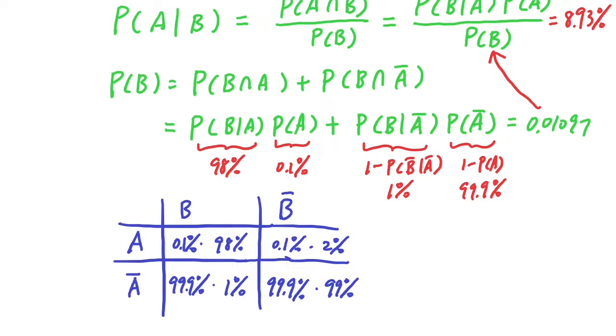As an alternative explanation, I have this 2 by 2 table here, where we have the probability of all four possible scenarios: A and B, A and not B, not A and B, not A and not B. The question we are really trying to answer is, when someone is tested positive, they belong to this first column for event B. What is the probability that they are really infected, which represents this top cell? So basically, we have this number divided by this entire column.